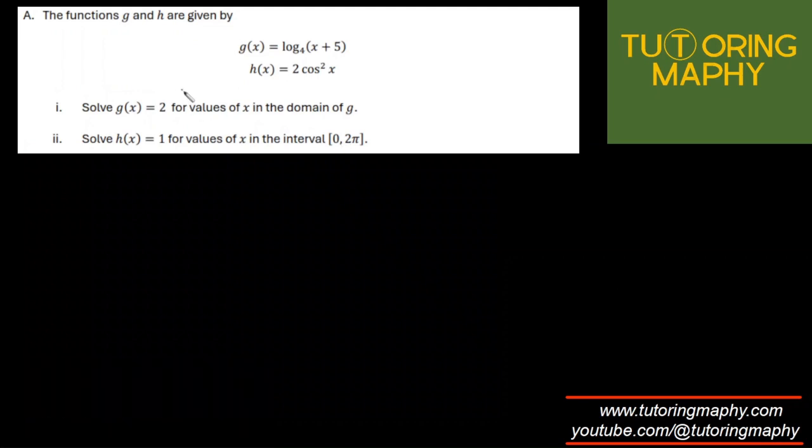Okay, so part A, they're talking about, now this is no calc by the way, the functions g and h is given by g(x) = log₄(x+5) and h(x) = 2cos²x. Solve for g(x) = 2 for the values of x in the domain of g. Alright, I can do that.